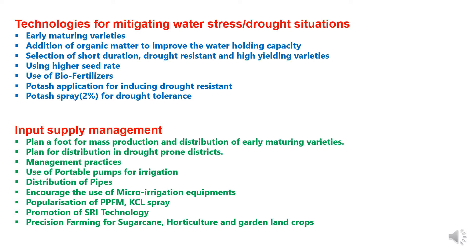The fourth component is input supply management, where we have to plan for mass production and distribution of early maturing varieties, especially in drought-prone districts. Management practices should be adopted according to conditions with appropriate crop and variety selection. Portable pumps should be used for irrigation, with distribution of pipes, and farmers should be encouraged to use micro irrigation systems which reduce water demand and allow the crop to sustain for longer periods.